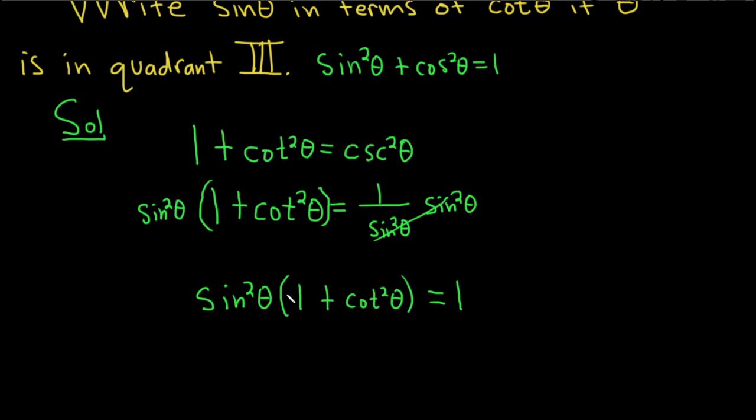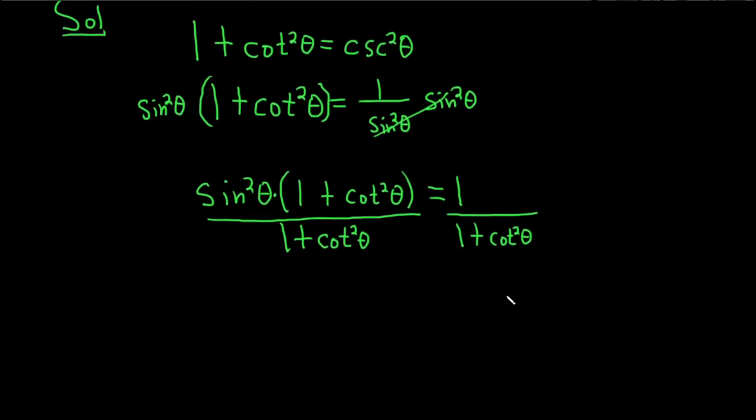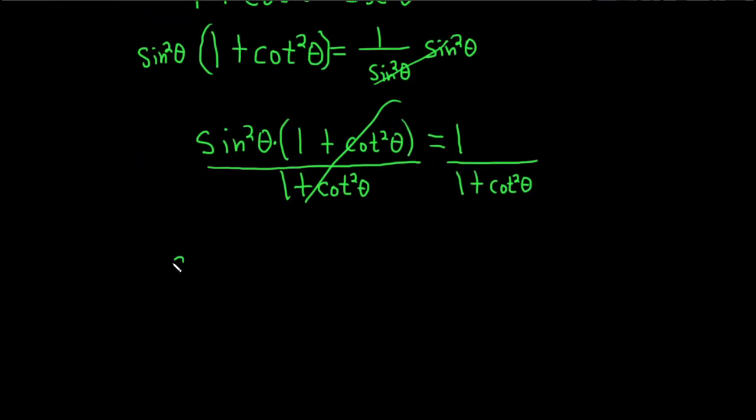We're looking for sine. It's being multiplied by 1 + cot²θ. So to get rid of it, we'll divide both sides by that. These cancel, so we have sin²θ = 1/(1 + cot²θ).